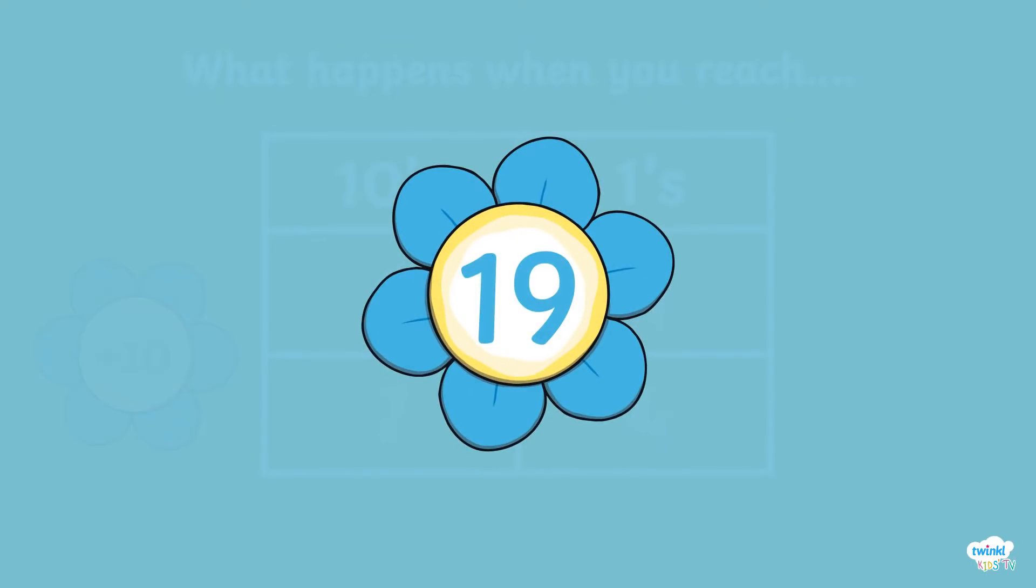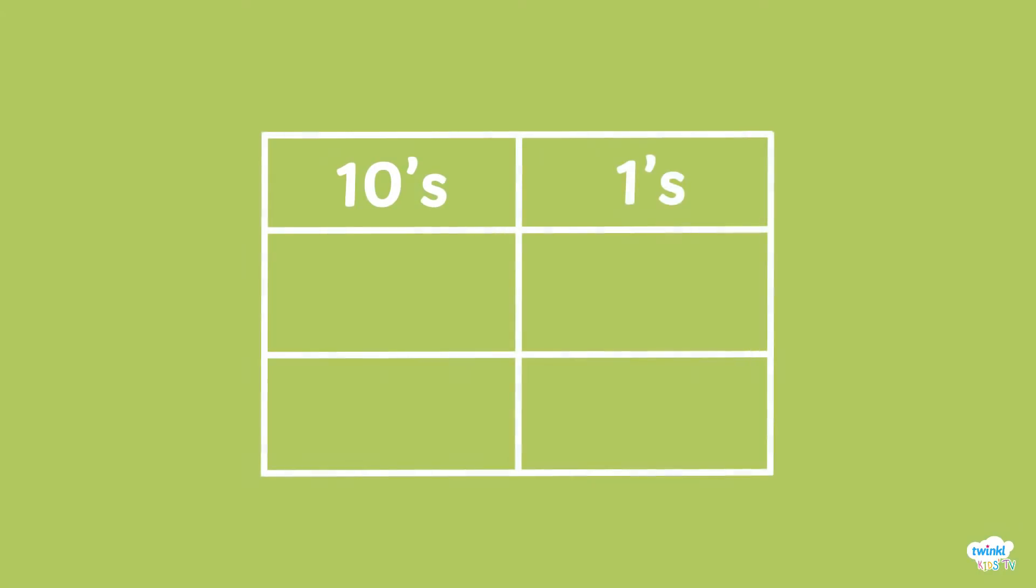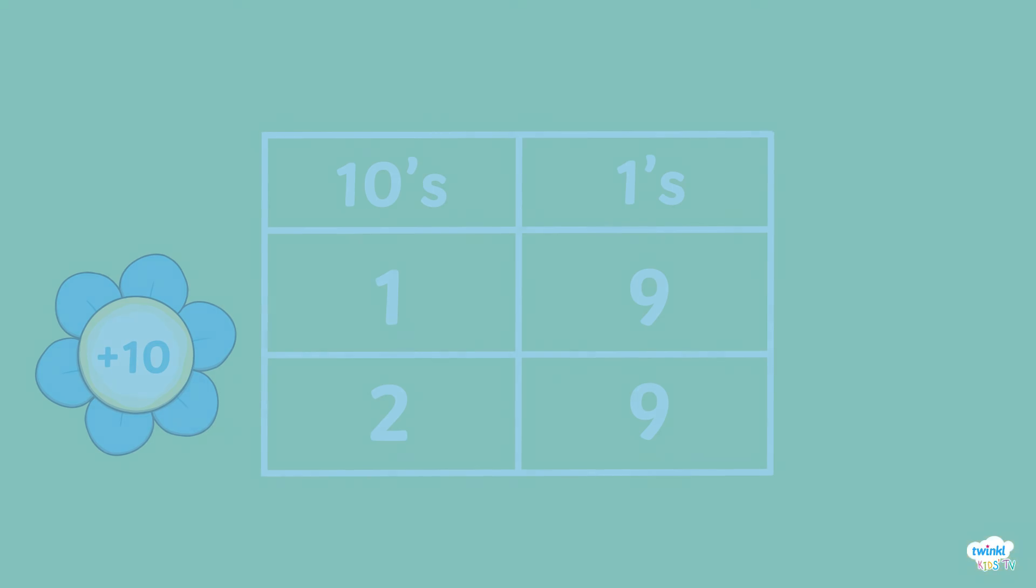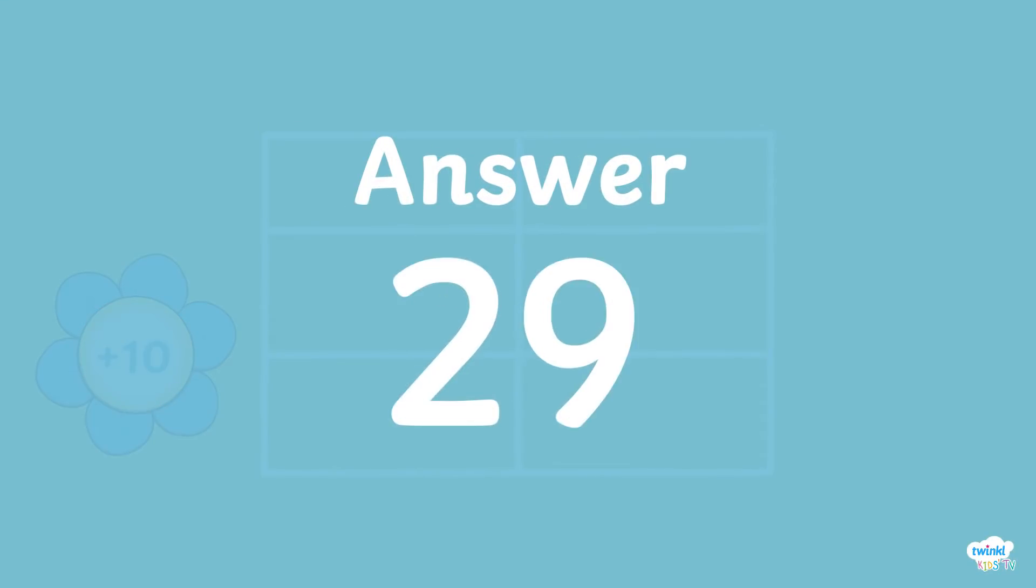Do you know 10 more than 19? Partition 19 and place 1 into the tens column to represent the 10 and the 9 into the ones column. As we are adding 10 to 19, we keep the 9 the same and the 1 now becomes 2. So the answer is 29.